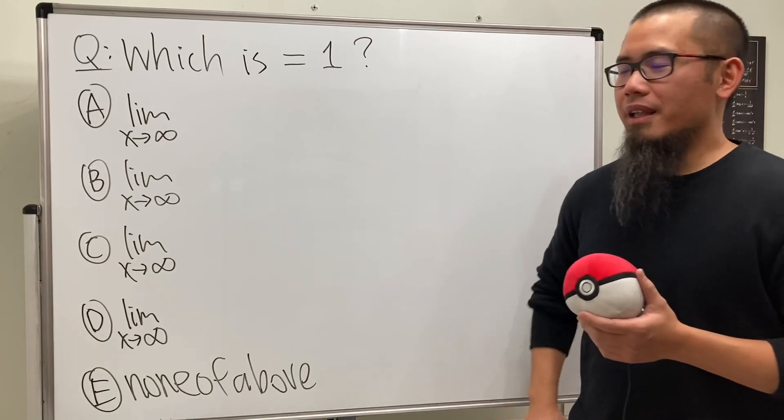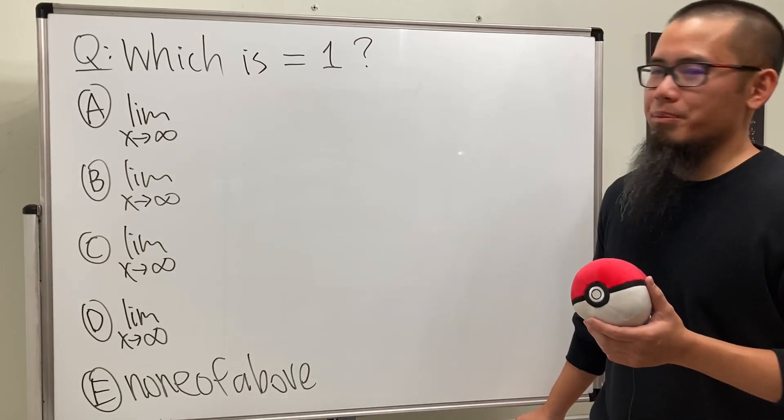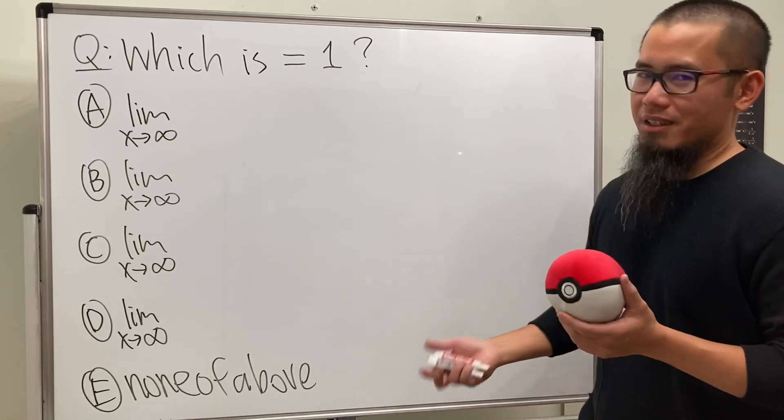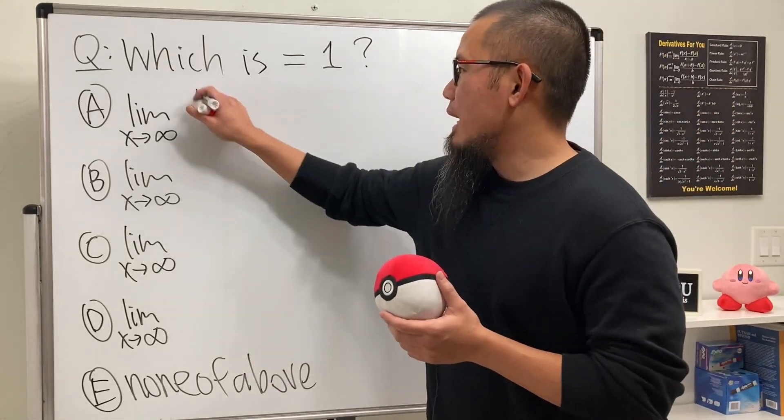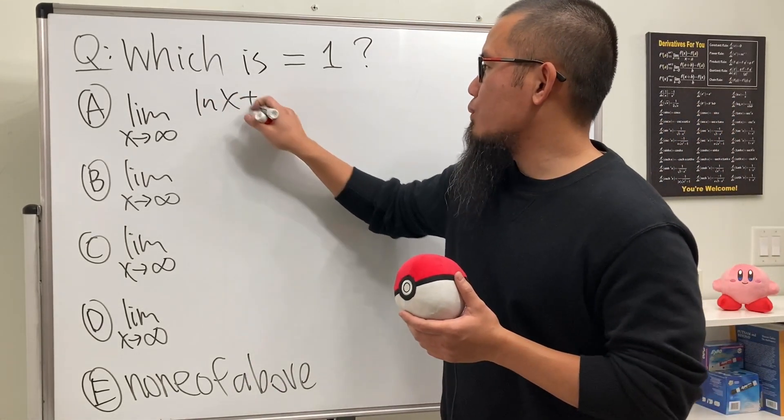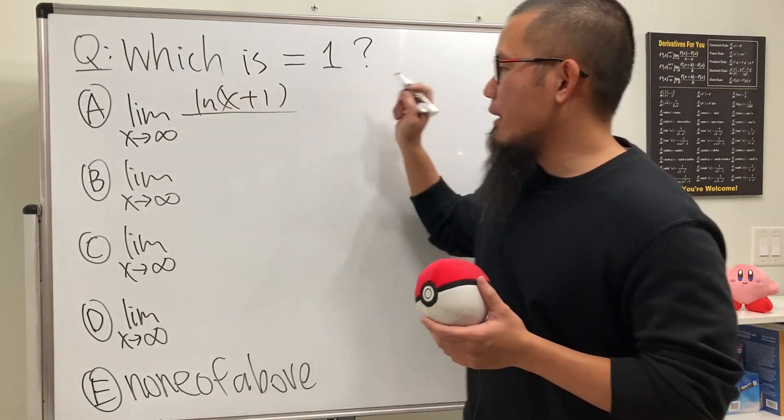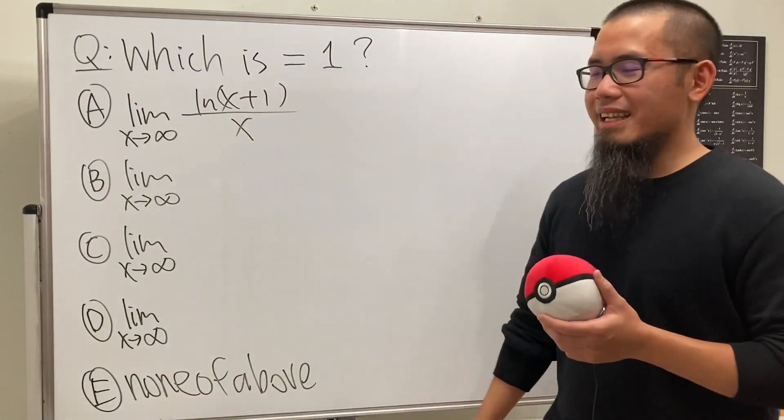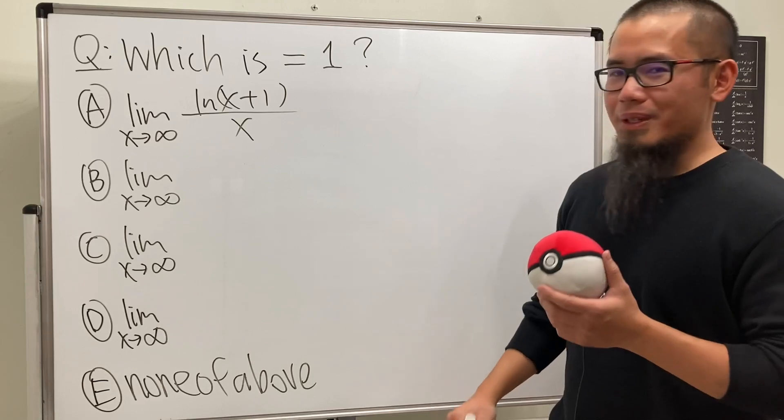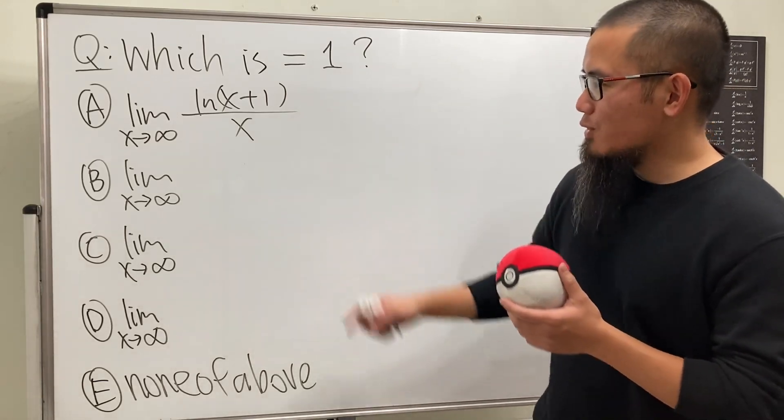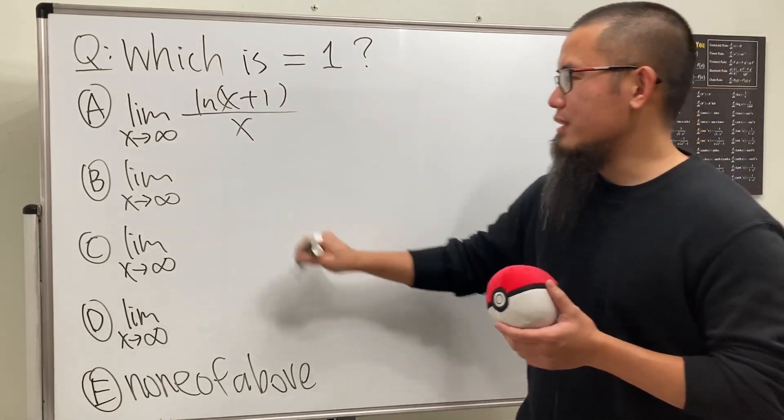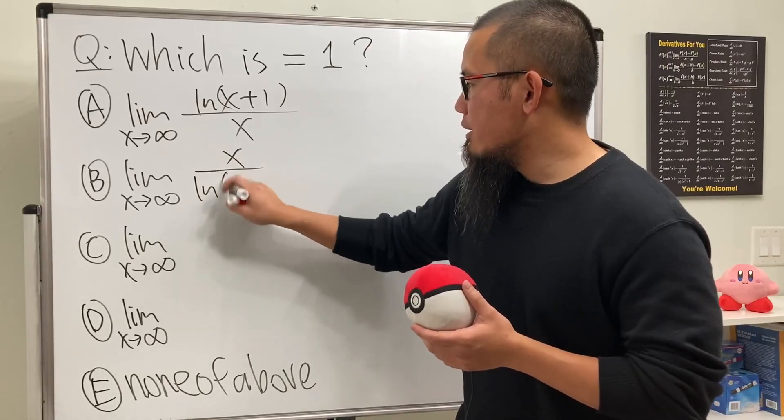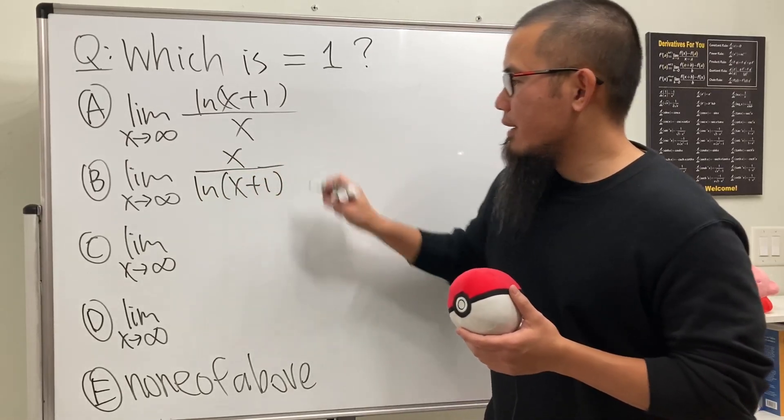But anyway, let's pick two functions to compare with. Again, I want to make this look like a question. For the first one, let's do ln(x+1) over x. And then you know what I like to do - I want to make them look pretty similar. So for the next one, I'm going to do the reciprocal of this: x over ln(x+1).